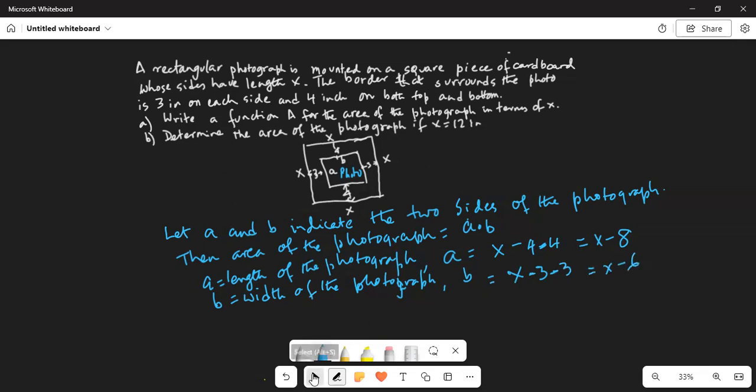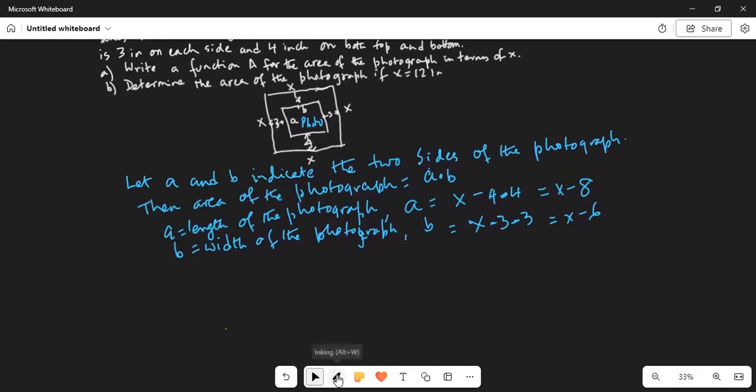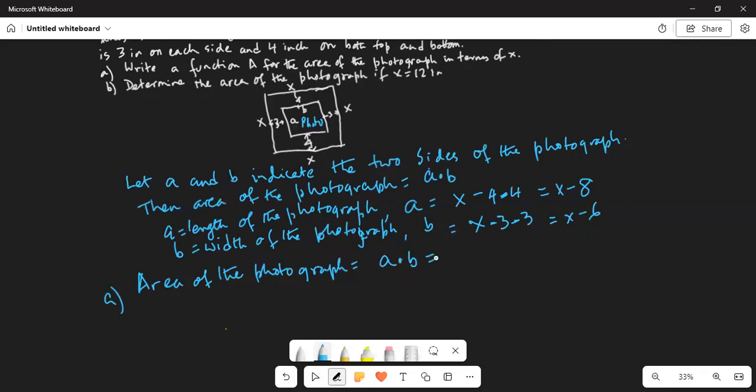So if I move this a little bit up, part a, area of the photograph is equal to a times b, which is equal to x minus 8 times x minus 6.